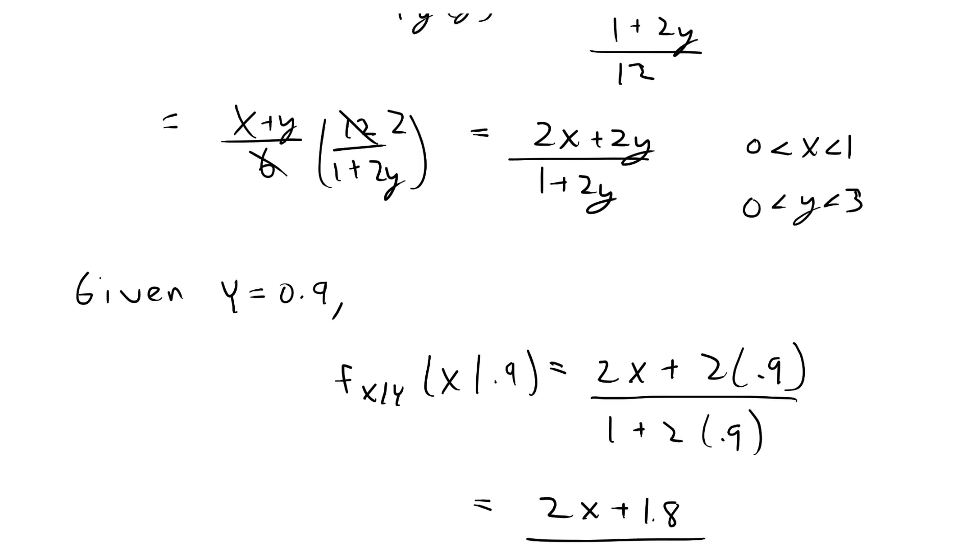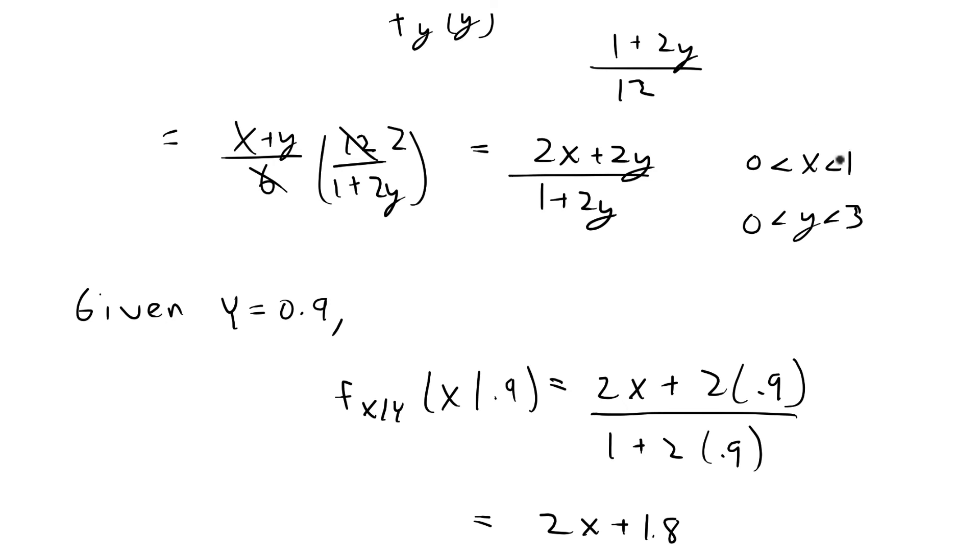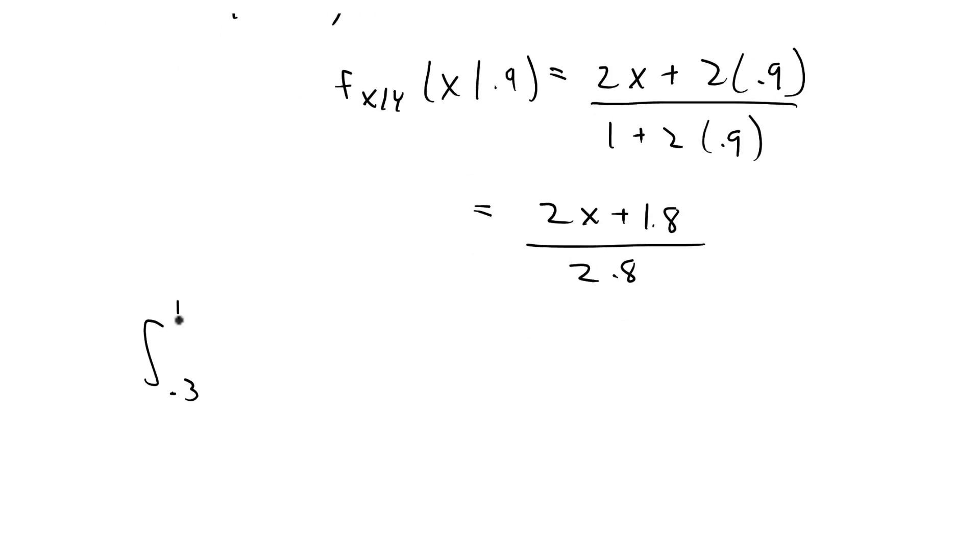If we're integrating with x having to be at least 0.3, we're going to integrate from 0.3 to 1 because that's the largest value where x can exist. We're going to integrate from 0.3 to 1 of 2x plus 1.8 over 2.8.